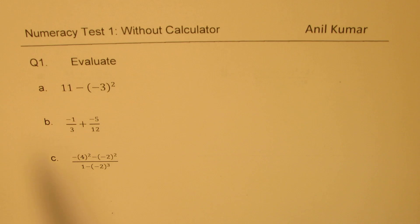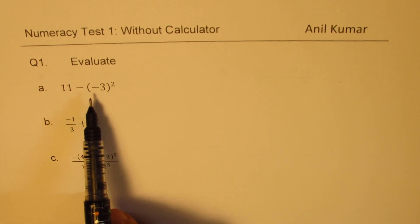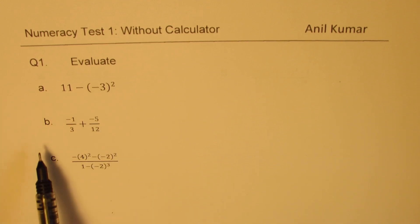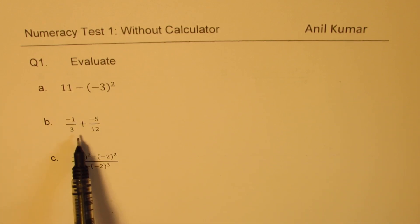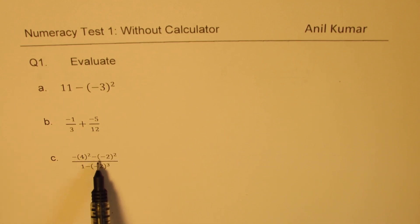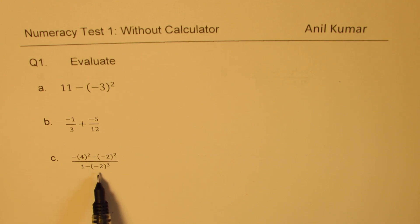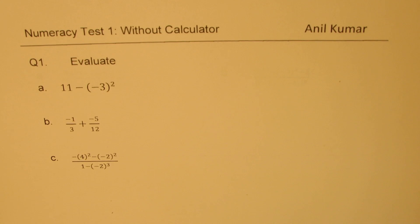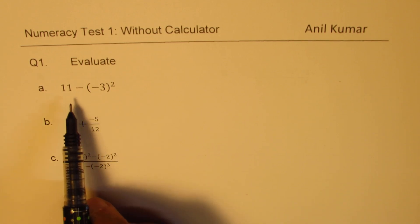Question number 1 is to evaluate: (a) 11 minus (-3) whole square; (b) minus 1 over 3 plus minus 5 over 12; and (c) minus 4 squared minus (-2) whole squared, divided by 1 minus (-2) whole cubed. In this test question, we are only checking how to work with integers, exponents, and fractions. Let us see how to solve such questions.